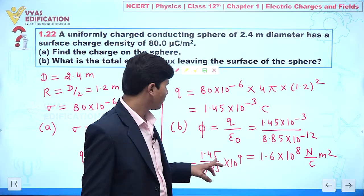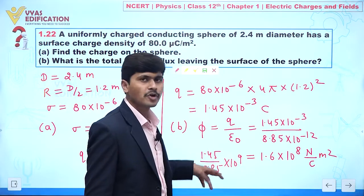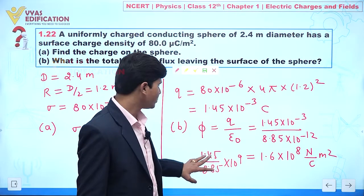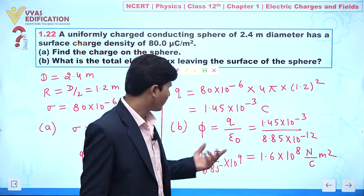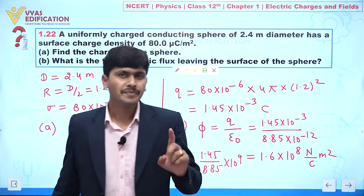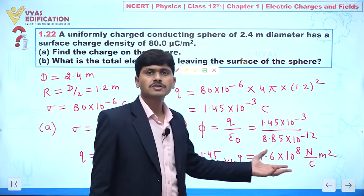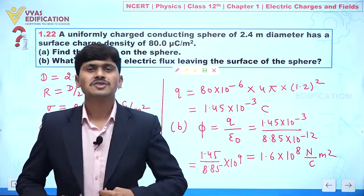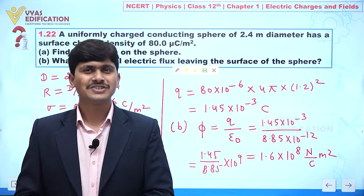Almost we can say here we are having 5 times or 6 times, almost 1 by 6. So we can say 0.16, we will find, and this is multiplied 10 to the power 9, so we will get 1.6 into 10 to the power 8. This is Newton meter square per coulomb. So this is answer of this question.